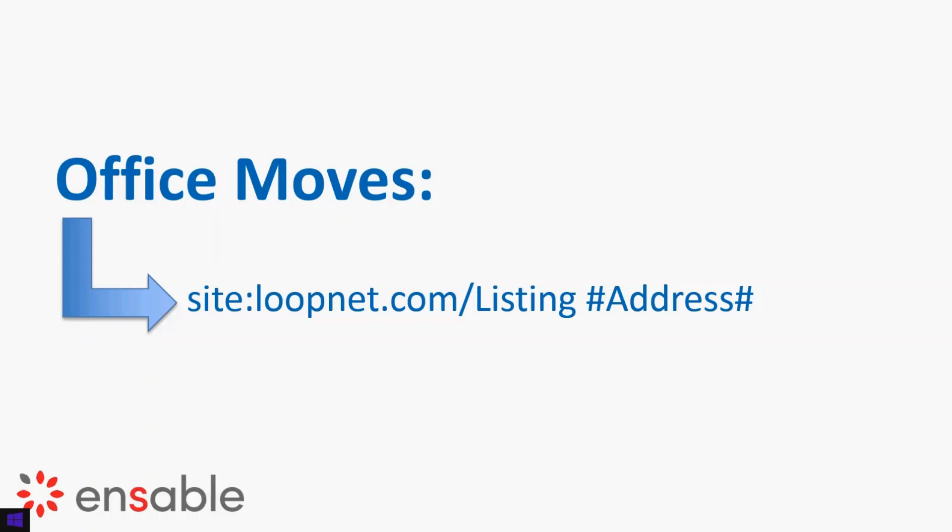One of the great tools we can use within Google Alerts is for office moves. Google Alerts is really powerful because it's able to track changes, and because companies are interested in being more visible via Google, they're putting more information out there. One of those sources is LoopNet, the largest commercial real estate website. When they post new office space that's becoming available or for rent or to buy, that's an indicator that whoever's in that building today will be leaving in the next three to six months.